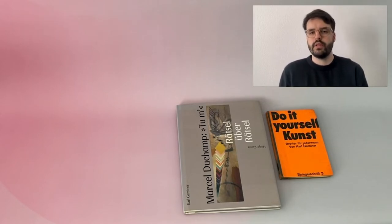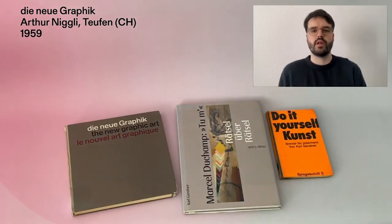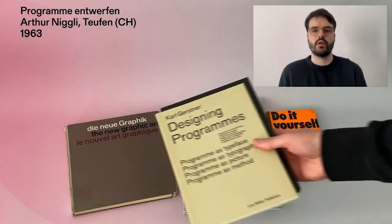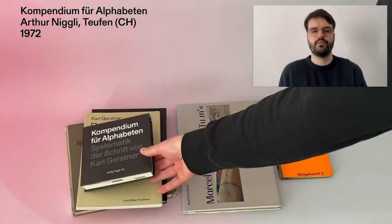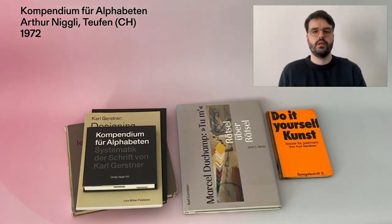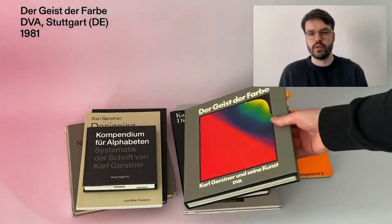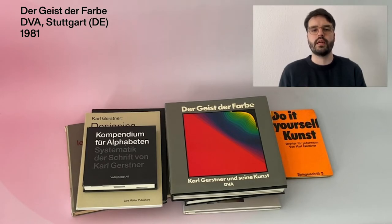In design theory, there is The New Graphic Art, which he published together with his friend and business partner Markus Kutter, his central work Designing Programs — which I also come back to — and his Compendium für Alphabeten (Compendium for Literates). Die Form der Farben (The Forms of Color) and Der Geist der Farbe (The Spirit of Colors) are catalogues of works in which Gerstner devotes considerable space to the intellectual context of selected series of his works.